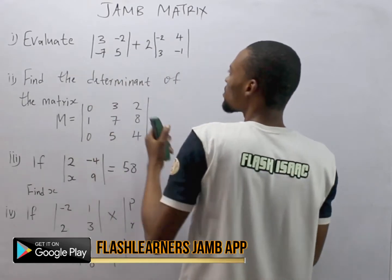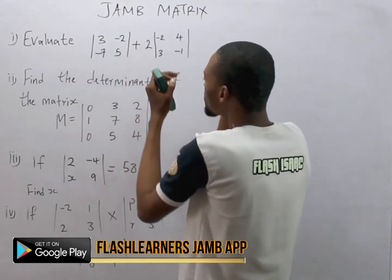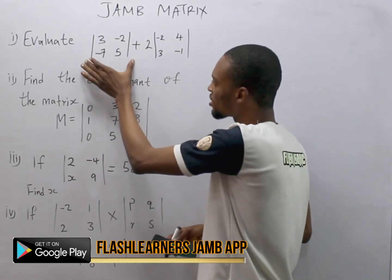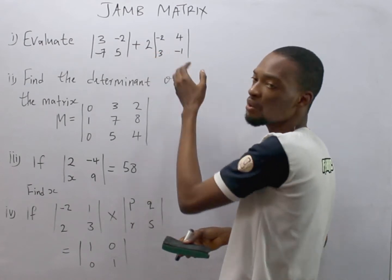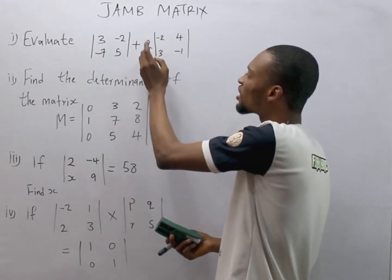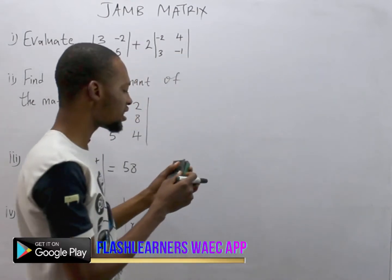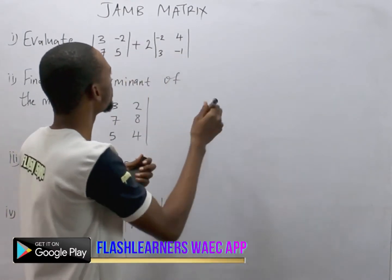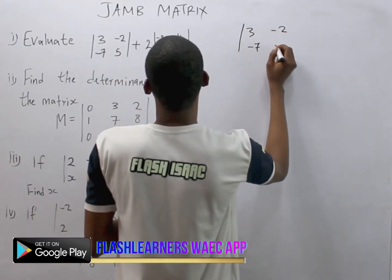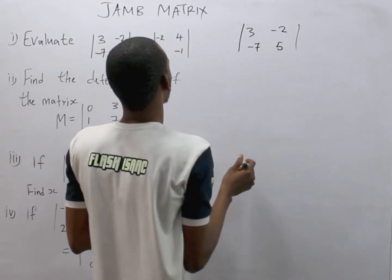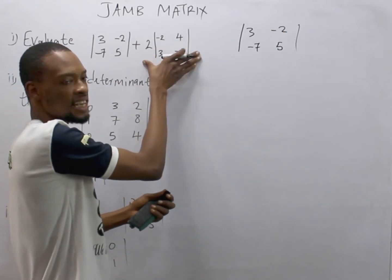Now, the first question says: evaluate this matrix plus this. This is a 2 by 2 matrix and involves scalar multiplication — using a constant value to multiply a matrix. The first thing we do is bring out 3, minus 2, minus 7, and 5. To multiply this, we use 2 to multiply everything inside the matrix.